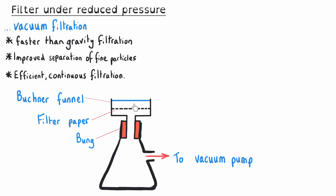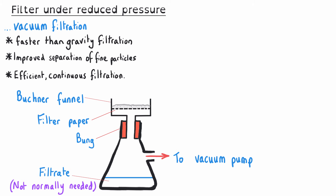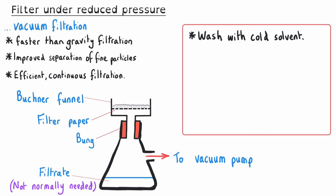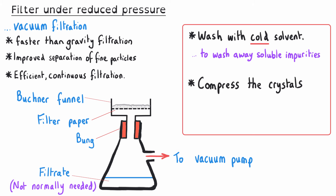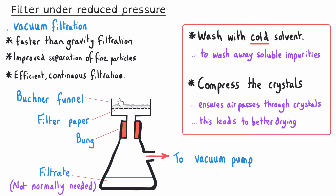We pour the liquid containing the solid into the top of the Buchner funnel and turn on the vacuum pump — sometimes as simple as turning on a tap and allowing the movement of water to pull the liquid down into the conical flask. The filtrate moves through the filter paper into the flask, while the solid is left behind on the filter paper. We wash our solid with cold solvent — typically the same solvent used earlier in the synthesis — using cold solvent being crucial because warm or hot solvent could dissolve the aspirin we're trying to collect. Sometimes we compress the crystals on the filter paper to ensure air passes through the crystals rather than around them, leading to better and faster drying.